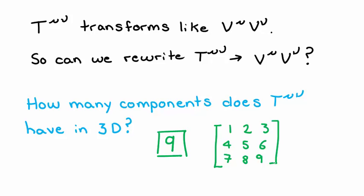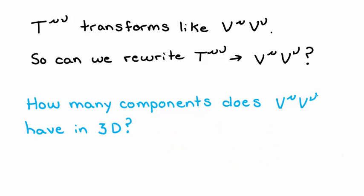In 3D, t mu nu can have as many as 9 components because we represent it as a 3 by 3 matrix. Now think about v mu v nu still in 3D. How many components would this have?